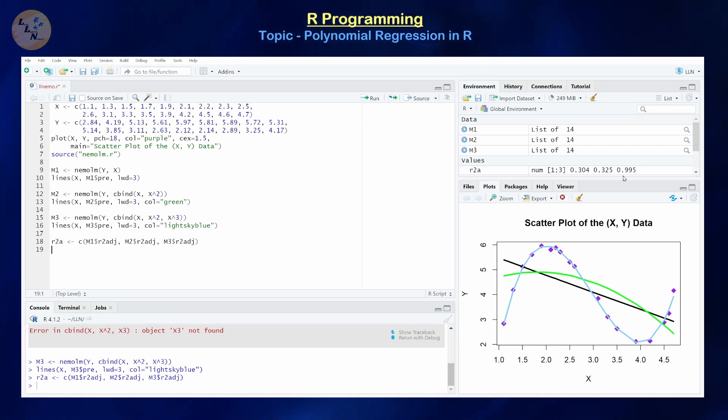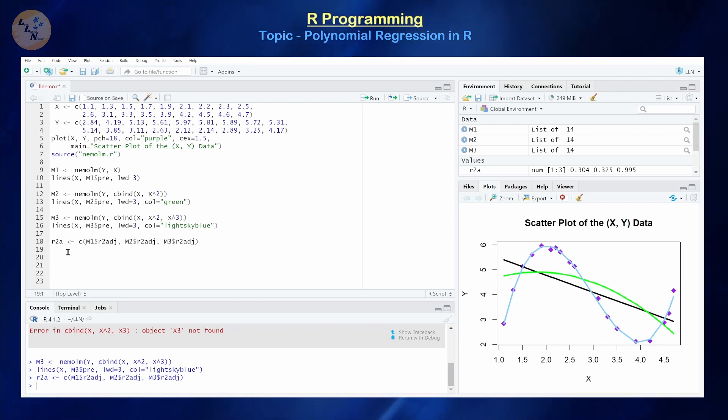So that's going to calculate our R squared adjusted values, and if we look in our environment, we have 0.3, 0.3, and something close to 1. So obviously from the R squared adjusted values, we see that the cubic model is significantly more impactful or significantly more representative of our data compared to our linear and quadratic models. So let's do a nice little horizontal bar chart that demonstrates that to our audience.